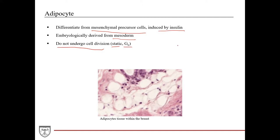If you remember the cell cycle from the cytology lectures, you have the G1 phase, then the S phase, then G2, and then the M phase. These are the phases you go through to undergo cell division. Some cell populations exit G1 and enter the G0 phase — these are considered static cell populations. Other examples of cells in G0 include cardiac muscle tissue and neurons in the nervous system.